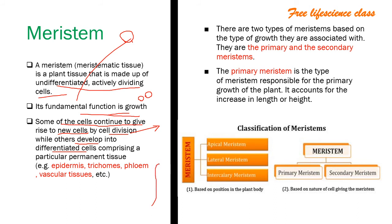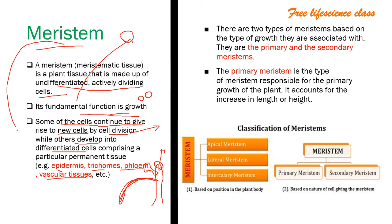Some meristem cells continuously give rise to new cells by cell division, while others undergo differentiation and give rise to specialized cells like parenchyma, water-conducting cells, epidermis, trichomes, phloem, and vascular tissues. Meristem is classified into two types based on the nature of cells: primary meristem, which gives rise to new cells by division, and secondary meristem, which gives rise to specialized structures.